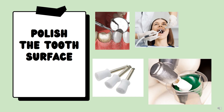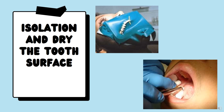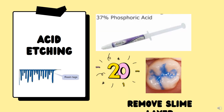Next is the technique of pit and fissure sealant. First, polish the tooth surface with pumice burs. Next, isolate and dry the tooth surface — isolation plays a very major role in treatment success. Then acid etching: we use 37% orthophosphoric acid. If less than 30%, dicalcium phosphate dihydrate is formed; if more than 50%, monocalcium phosphate monohydrate is formed. Acid etching is done for 20 seconds. Make sure to remove the smear layer during acid etching.